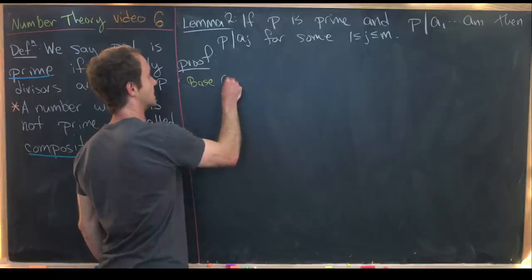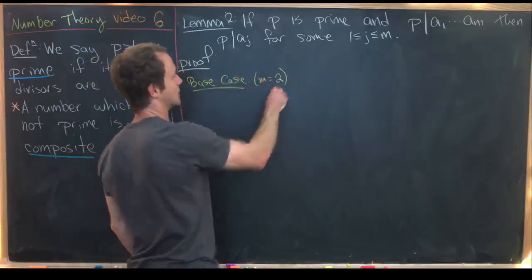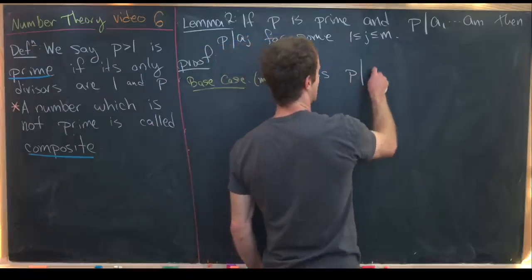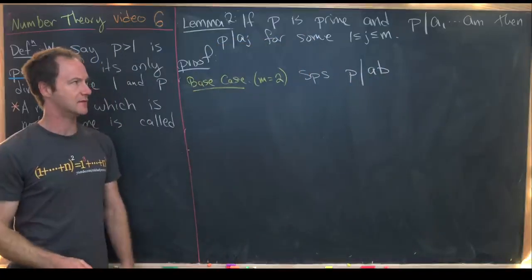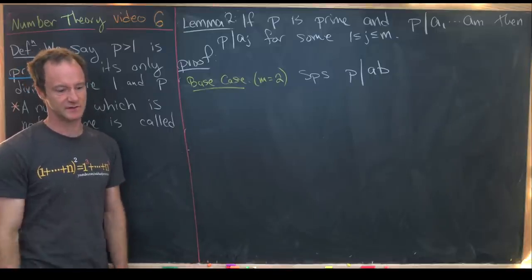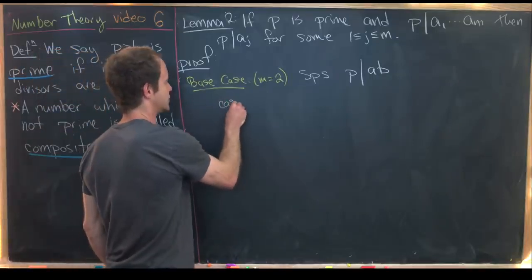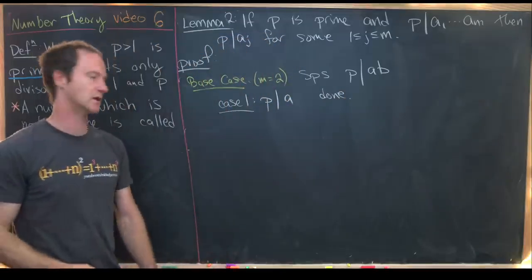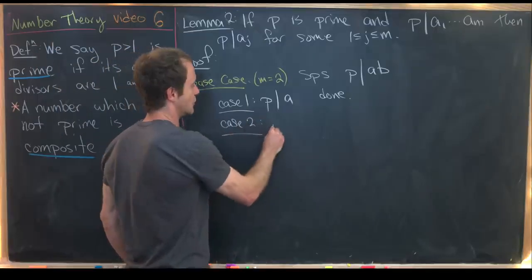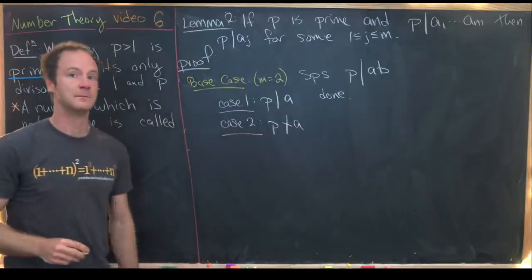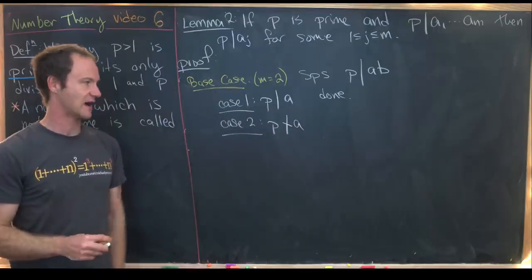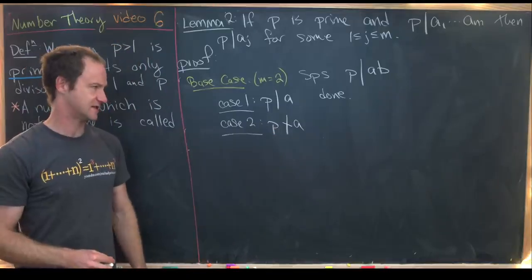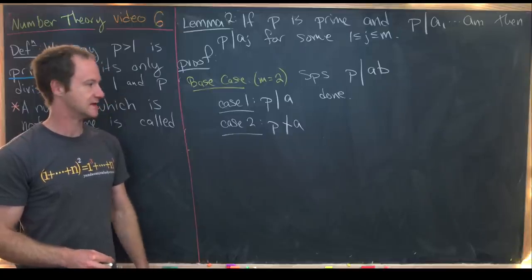We'll prove this by induction. The base case is m equals 2 — m equals 1 isn't very interesting. Suppose p divides a times b. Case 1: p divides a. In this case we're already done because p divides one of them. Case 2: p does not divide a. Since p is prime, its only divisors are 1 and p, so if p doesn't divide a, then the gcd of a and p equals 1.